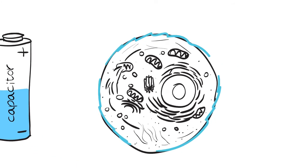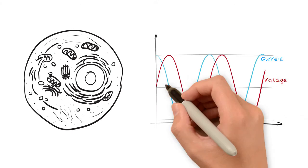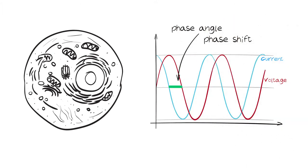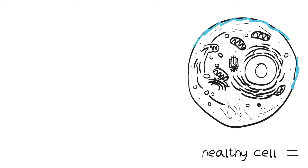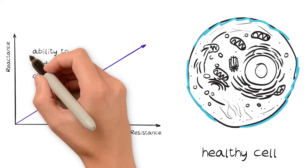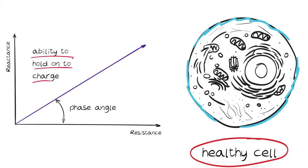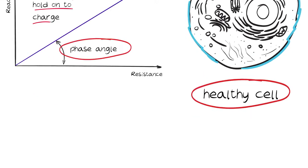For this reason, cell membranes can be considered to act as capacitors. The phase angle, or phase shift, measures the ability of that cell to act as a capacitor. The greater the ability to hold on to this charge, the healthier the cell, and the higher the phase angle.